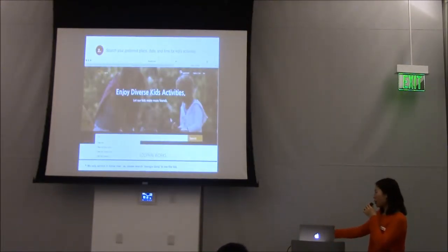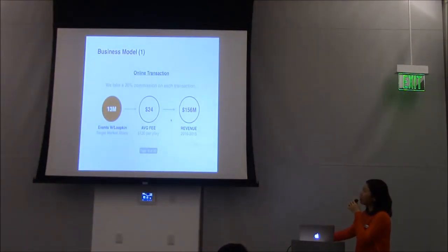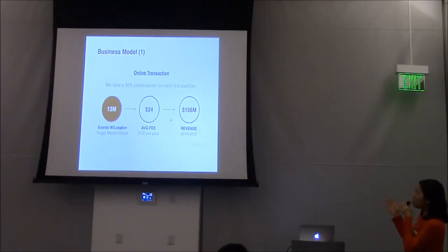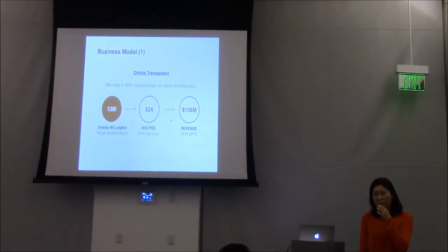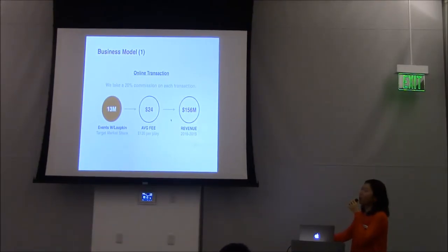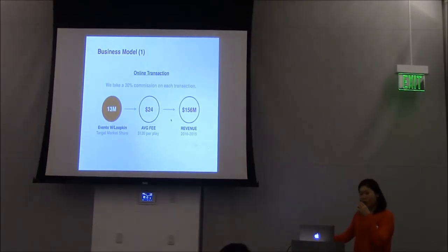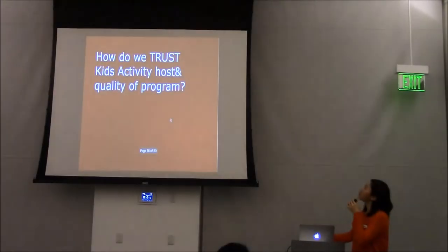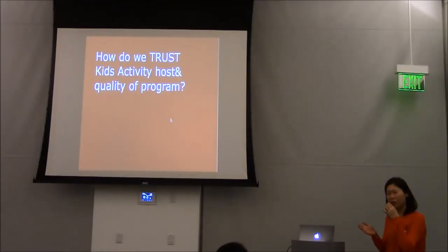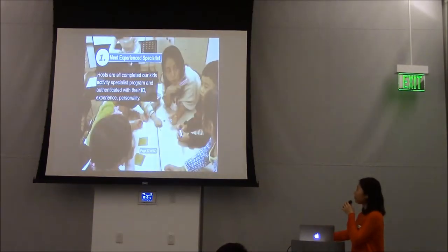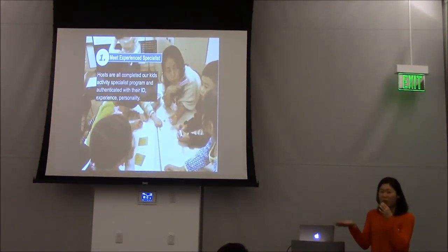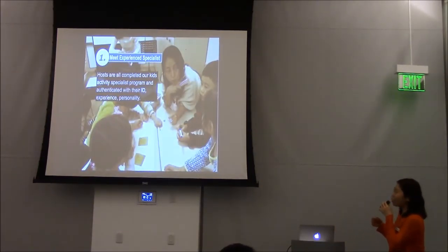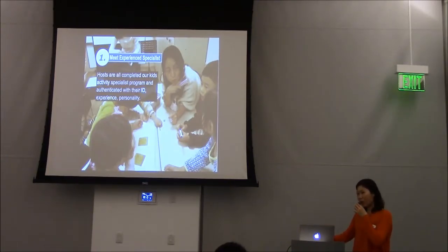This is our platform, as you've already seen. Our first business model: we take a 20% commission out of each transaction, and we expect to make around $150 million by 2019. To build trust in kids' activity events, you can meet experienced kids' event hosts through our training workshop sessions.